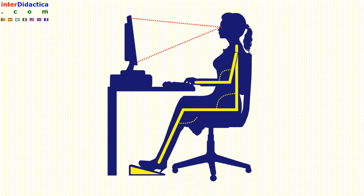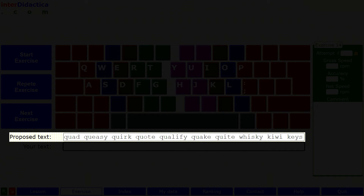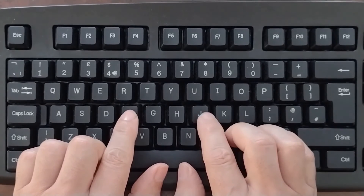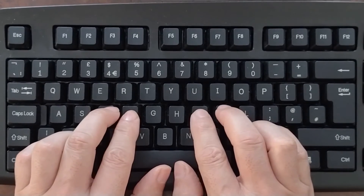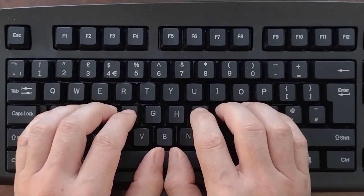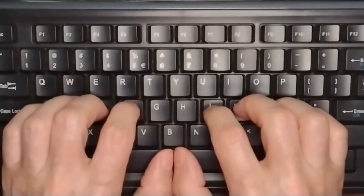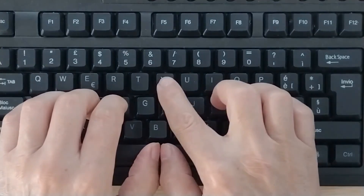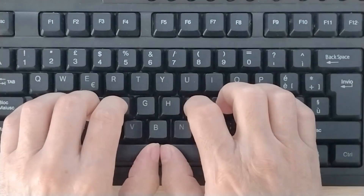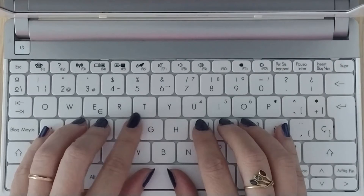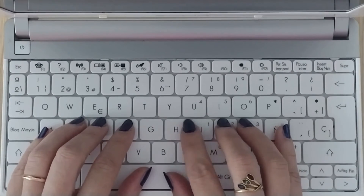Before starting the exercise, adopt the correct body posture. Read the proposed text. Place your hands correctly on the keyboard, starting with the index fingers grazing the ridges of the F and J keys. Reinforce the memory of the keys by rehearsing them, especially those that correspond to the ring fingers and those that are further away such as T and Y. If you have a doubt about any sign, train the movement of the corresponding fingers before starting. Take a deep breath. Look only at the keyboard on the screen and mentally repeat each key. Don't get distracted.